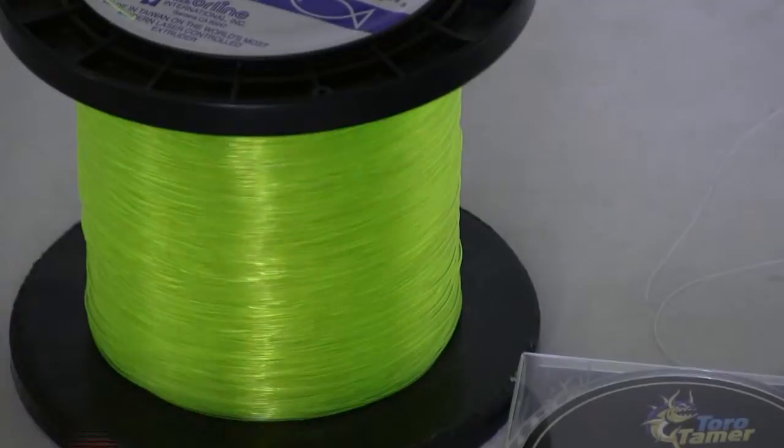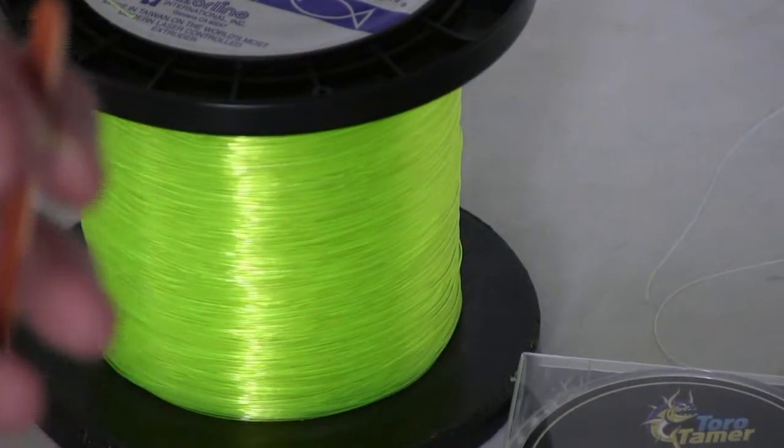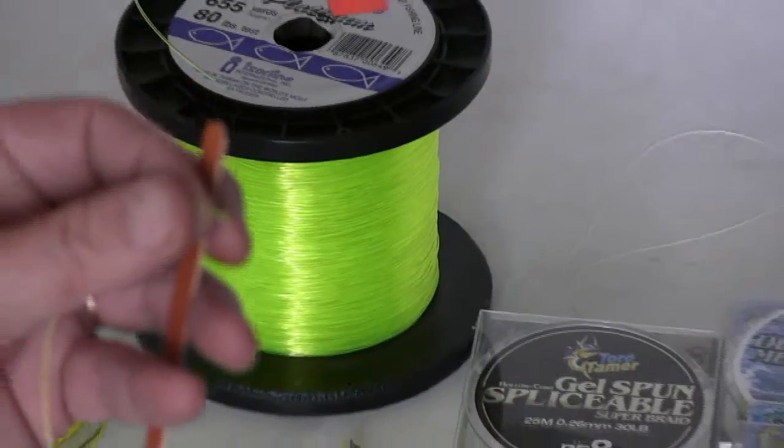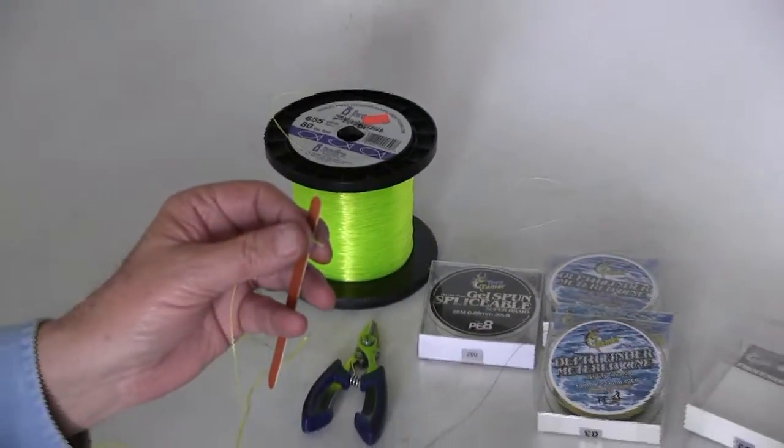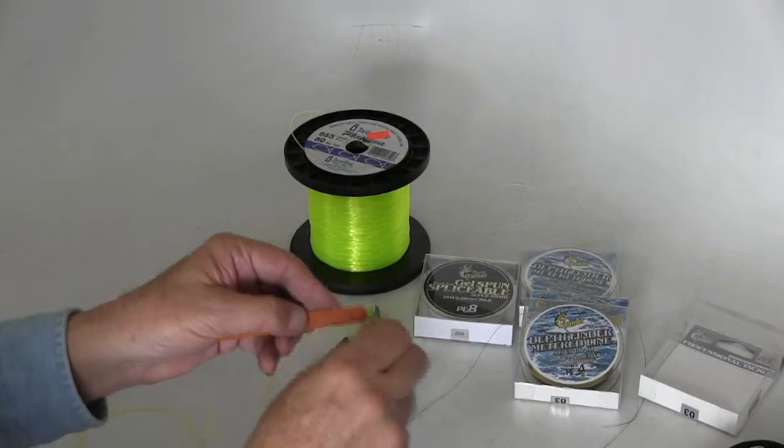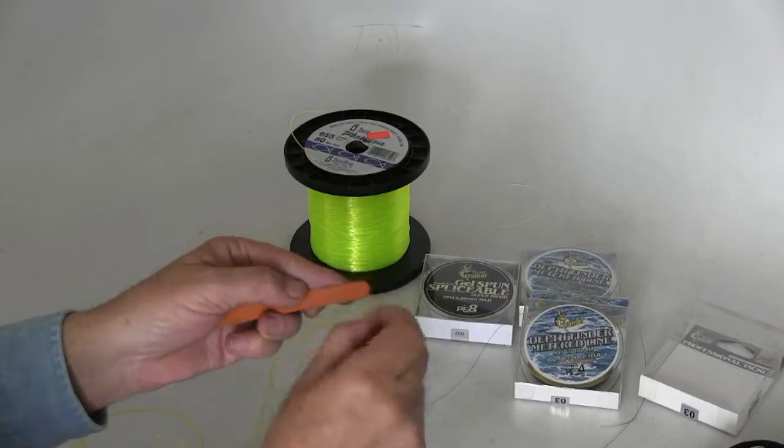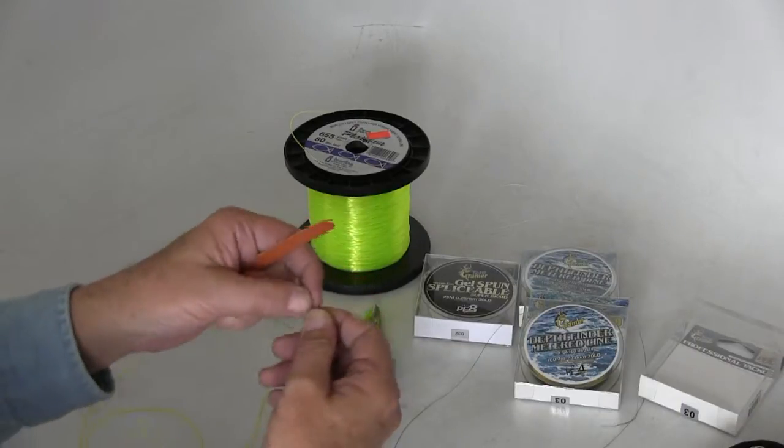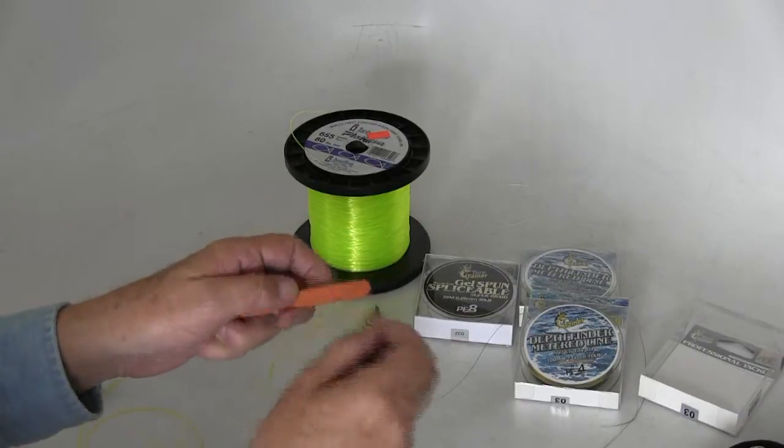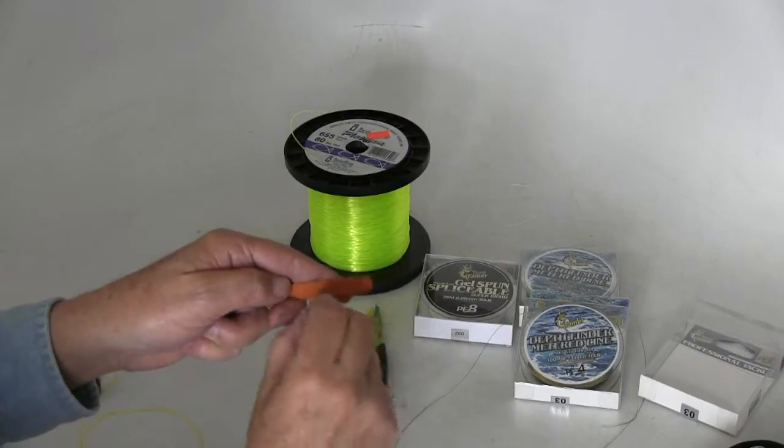The first thing we'll want to do with our leader is to go ahead and use a little emory board and round down the edge which has been cut, which would be a little bit sharp and pointy. We'll want to smooth that out a little bit using the file. Then once that's done, we'll insert the end of that leader into the hollow threading needle.